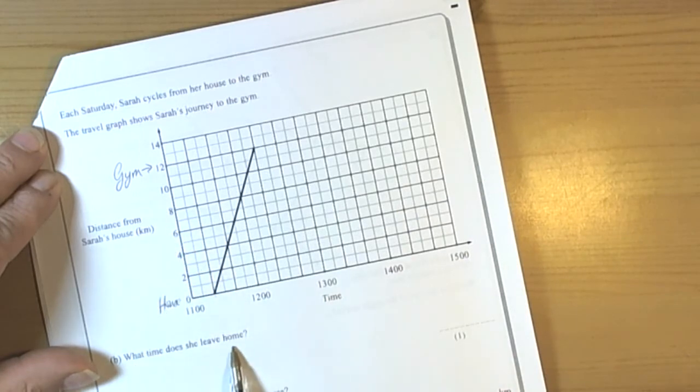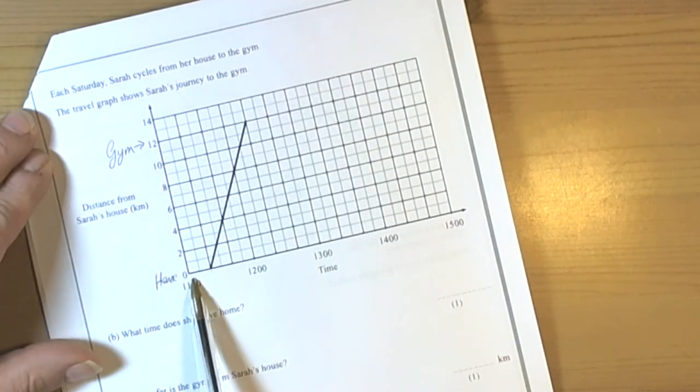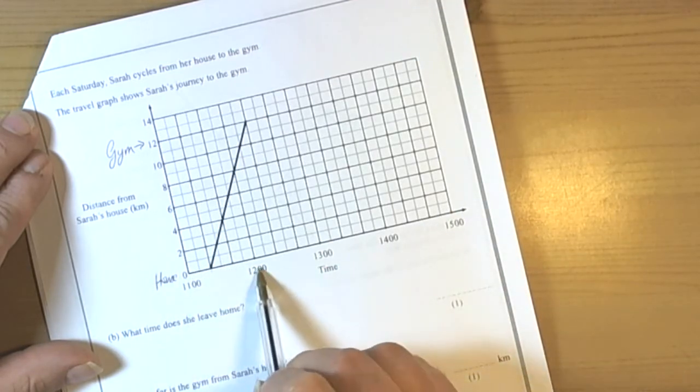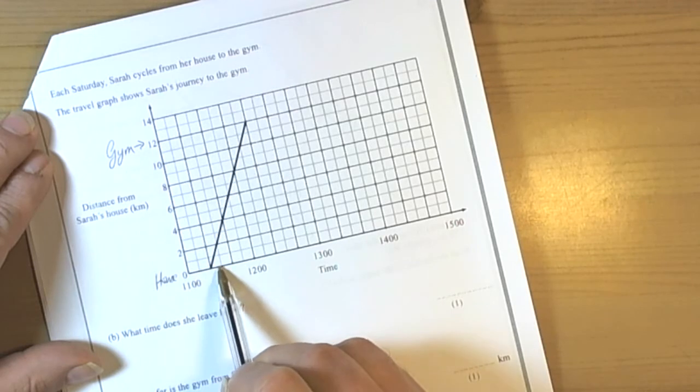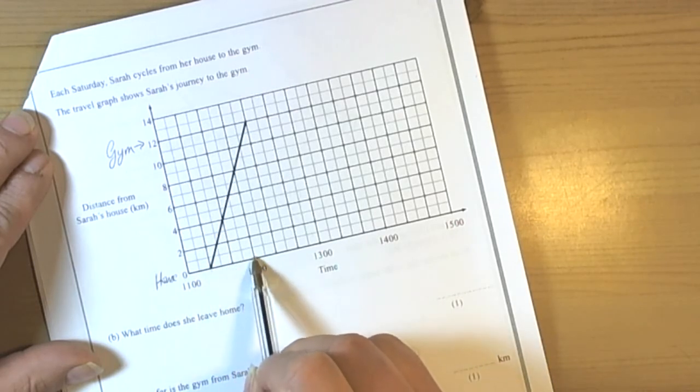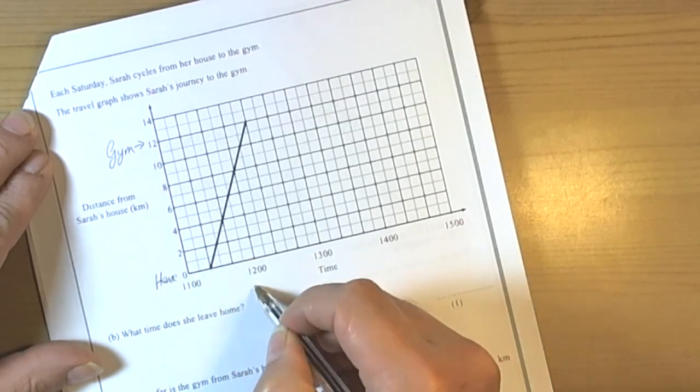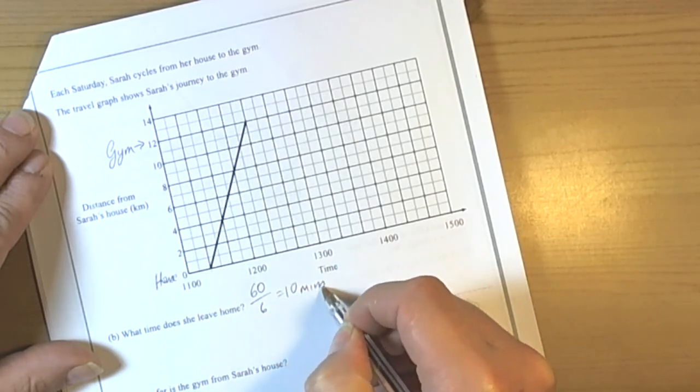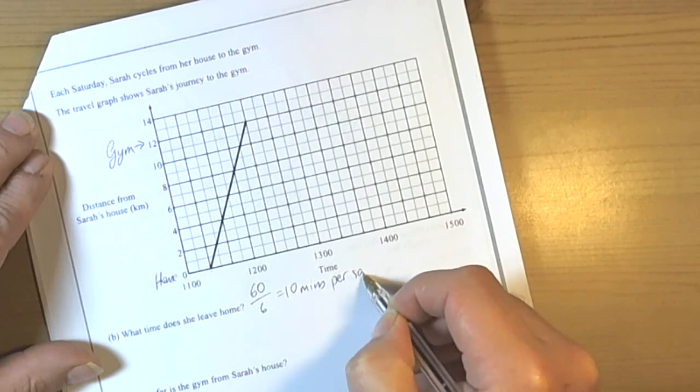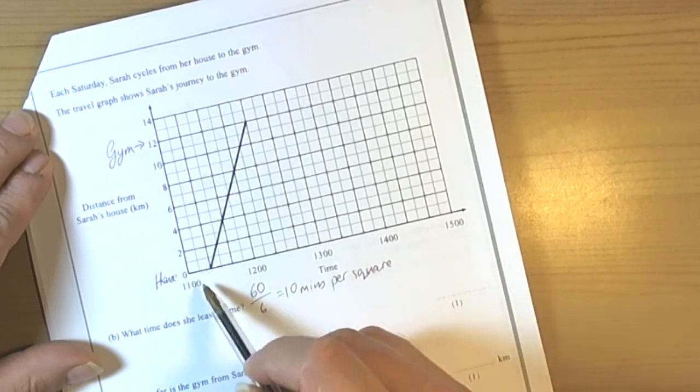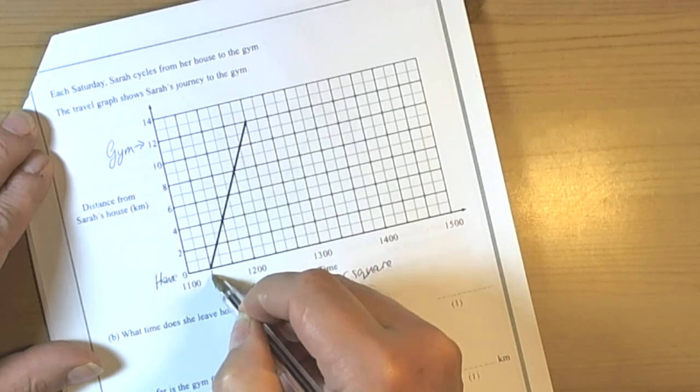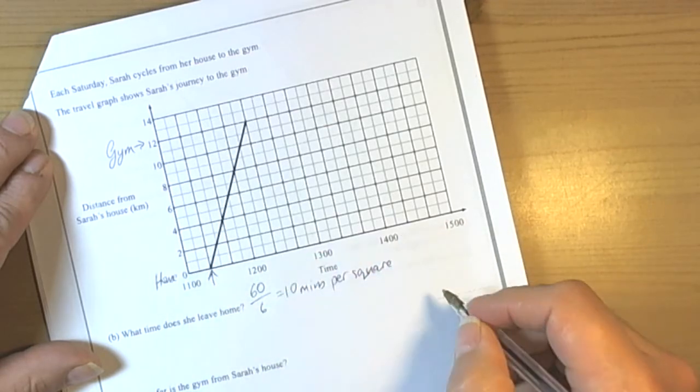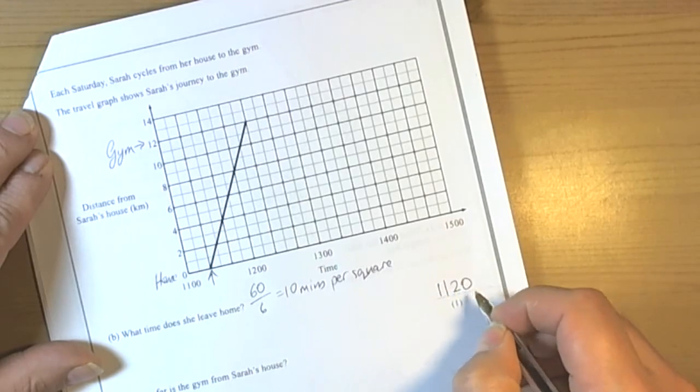It says here what time does she leave home. We've always got to work out the scale of a graph. So when we look along here we can see that for one hour there are 1, 2, 3, 4, 5, 6 squares. So 60 minutes divided by 6, that's 10 minutes per square. So when we're working out what time she leaves, she must leave home at this point here. So it's 11:10, 11:20. So she leaves home at 11:20.